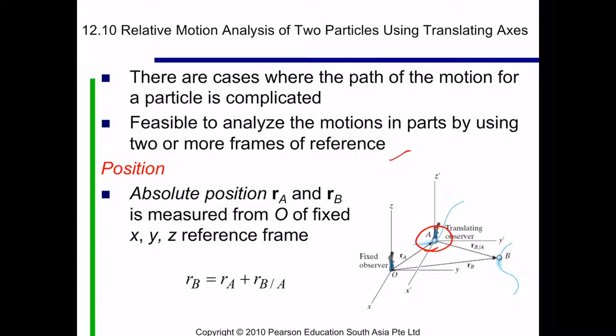In terms of position, the absolute position RA and RB is measured from O of fixed XYZ reference frame. In this case, we have RA and then we have RB and then this is RB relative to A. So we can write it as RB equals RA plus RB relative to A.